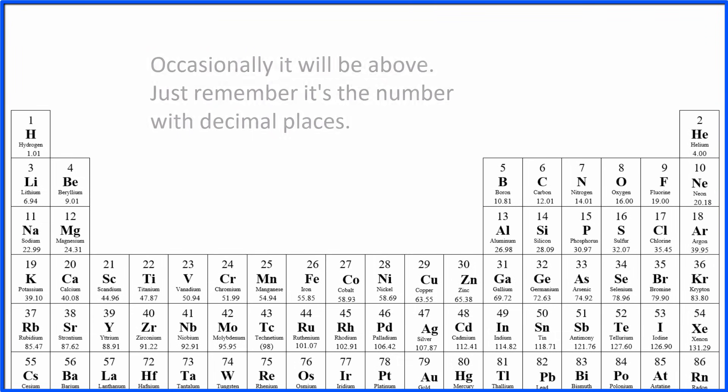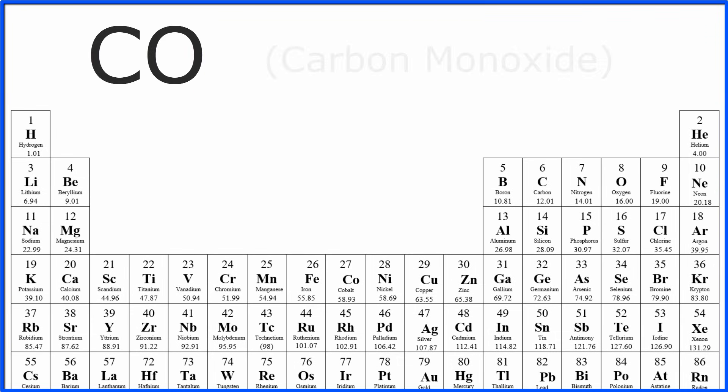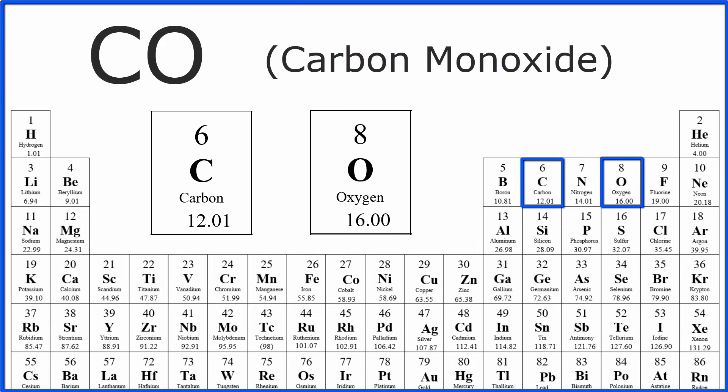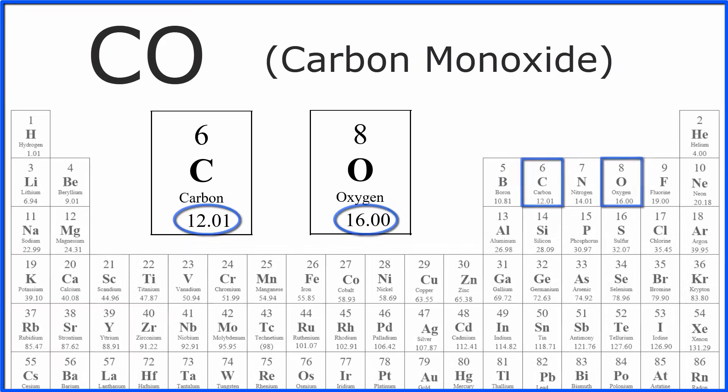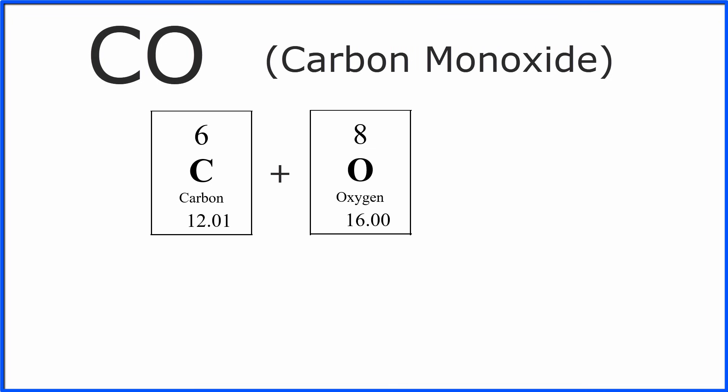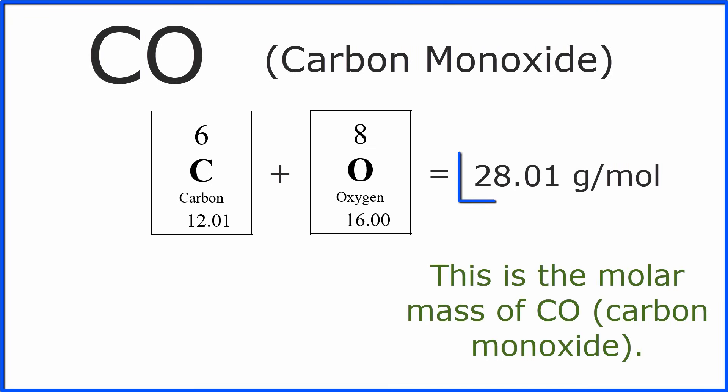Let's find the molar mass for carbon monoxide. So we go to the periodic table, we find carbon and oxygen, and we see the atomic mass right below the element symbol. To find the molar mass, we add those two numbers together, and we add the units grams per mole, and we're done.